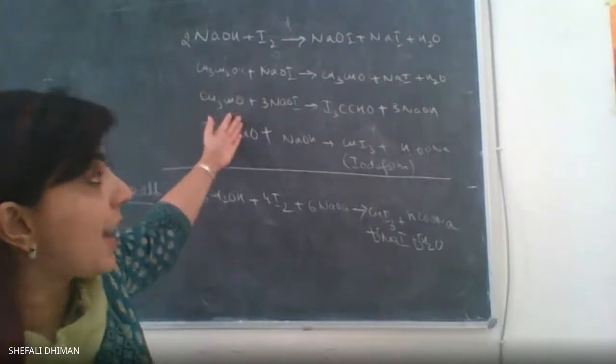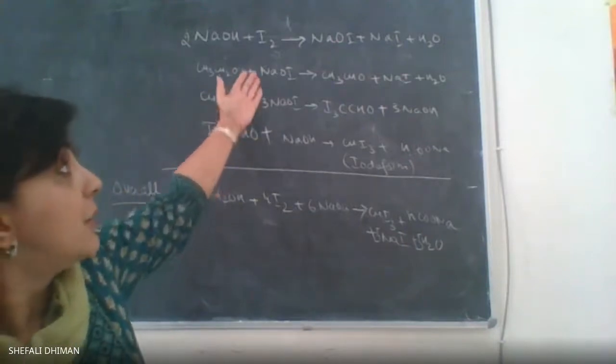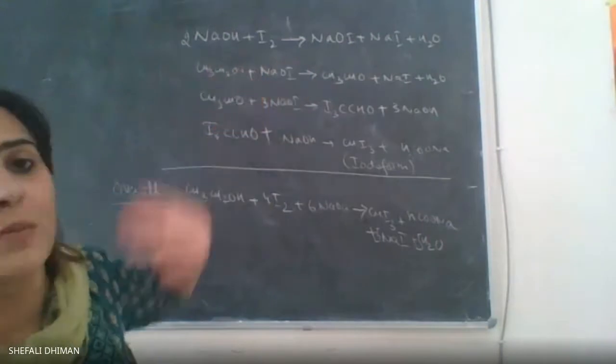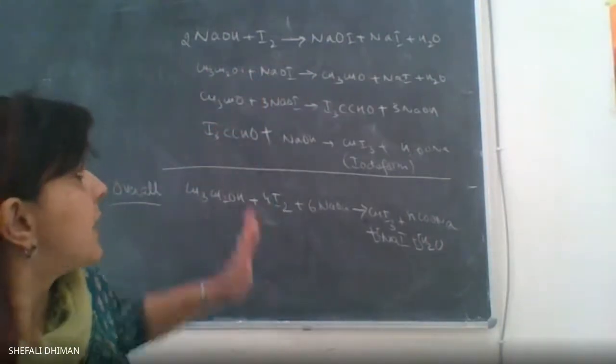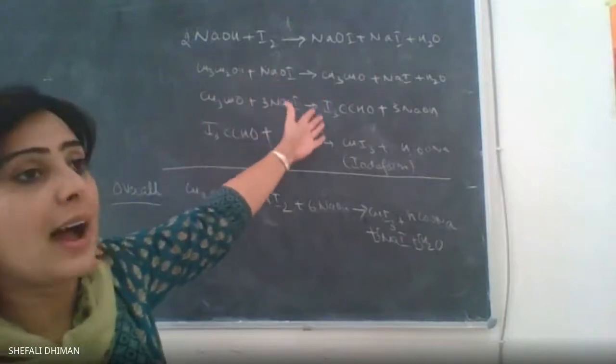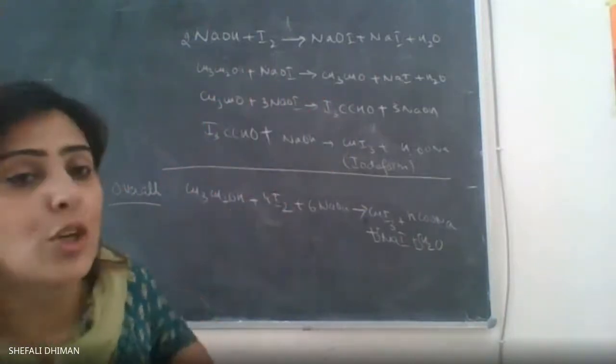There are four reactions taking place: the first step is that NaOH and iodine are added to form sodium hypoiodite, the second step is aldehyde, the third step is triiodo acetaldehyde and finally you would form Iodoform.